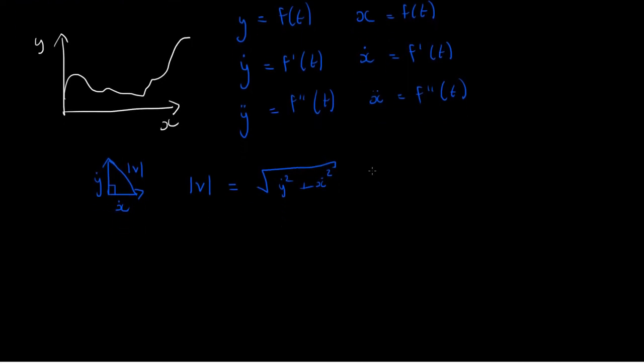And we can do exactly the same thing again with the acceleration. We replace this with double-dot, so if I do this diagram down here, we have a y-double-dot, x-double-dot, and on here we have the modulus of the acceleration.